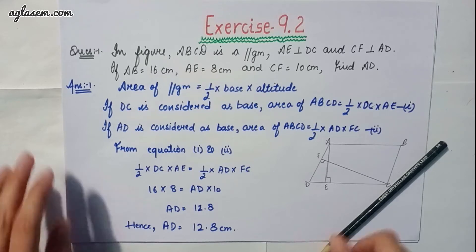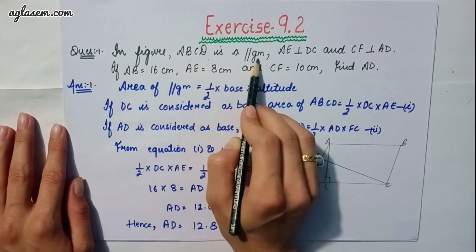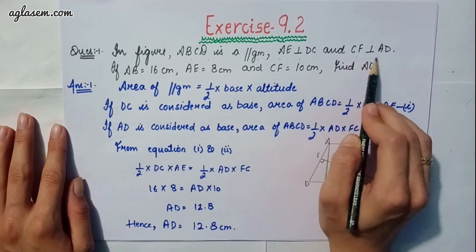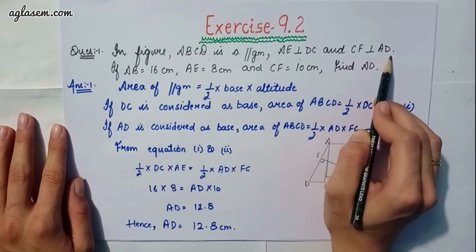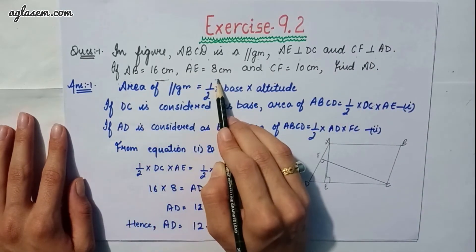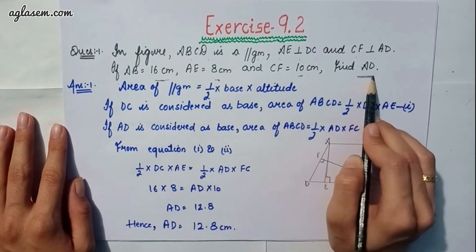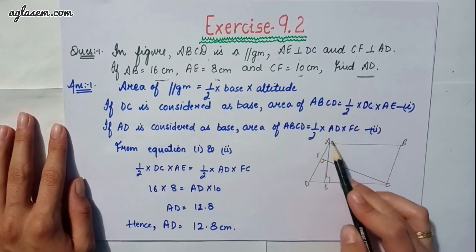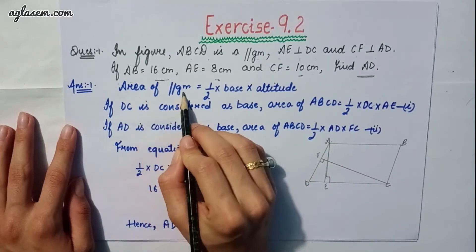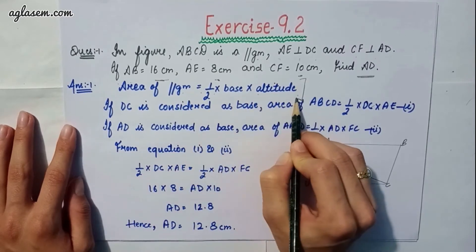Our first question says: in the figure, ABCD is a parallelogram, AE is perpendicular to DC, and CF is perpendicular to AD. If AB is equal to 16 cm, AE is equal to 8 cm, and CF is equal to 10 cm, we have to find AD. The area of a parallelogram is equal to base into altitude.